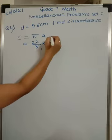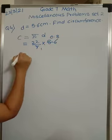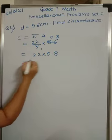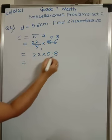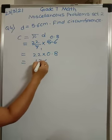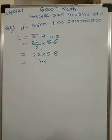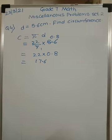7 ones are 7, 8s are 56 but it is 5.6 so it will be 0.8. So this would be 22 into 0.8. Which is equal to 8 times 2 is 16, 8 times 2 is 16 plus 1 is 17. After one number point is there. So what would be the circumference? Circumference of this circle would be 17.6 cm.